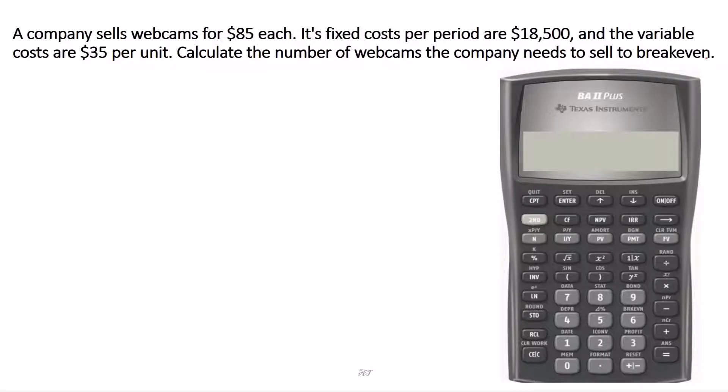In this problem, the company sells webcams for $85 each. $85 is the selling price, represented by P in the calculator. The company's fixed cost per period is $18,500, represented by FC in the calculator. The variable cost per unit is $35, so our VC is $35.